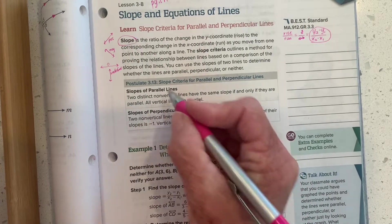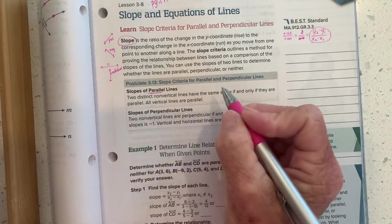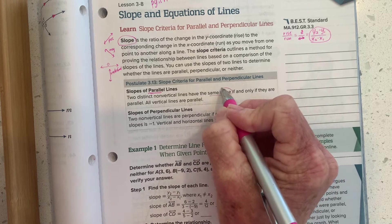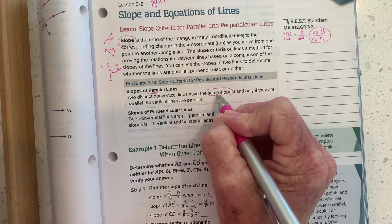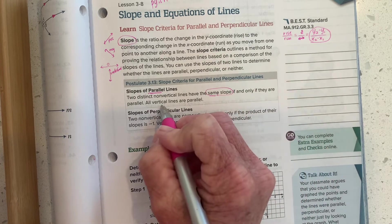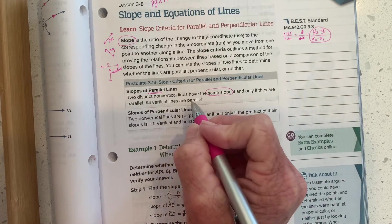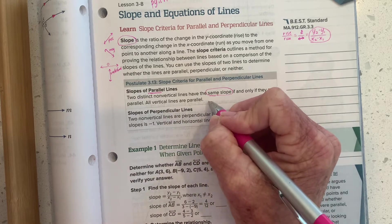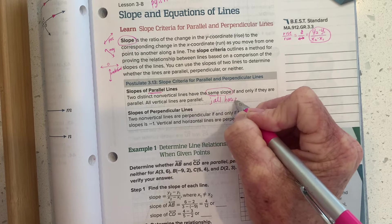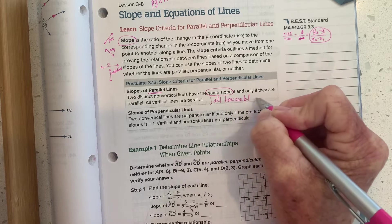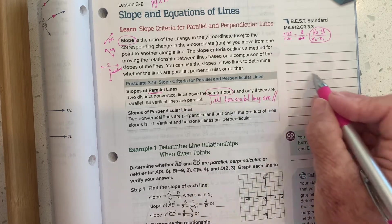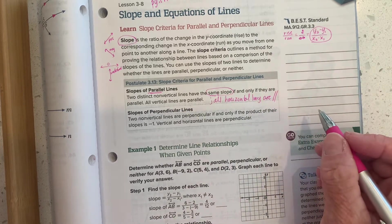So when we're talking about lines that are parallel to each other, anytime you have lines that are parallel, they are going to have the same slopes. Two different lines will be parallel to each other if their slopes are the same. All vertical lines are parallel to each other, so are all horizontal lines.